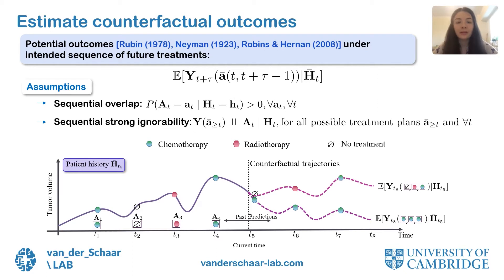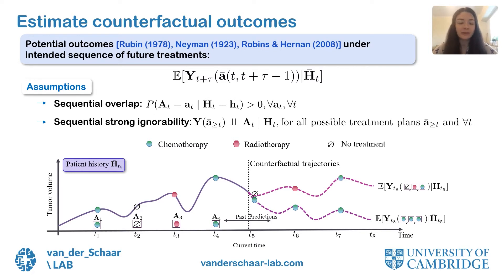We work in the Neyman-Rubin potential outcomes framework, which was extended by Robbins and Hernan to account for time-varying treatments. Using observational data, our aim is to estimate all potential outcomes Y — both factual and counterfactual — under an intended sequence of future treatments from time step T to time step T plus tau minus 1, conditioned on the patient history at time step T.